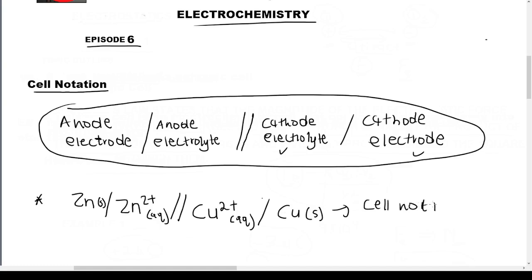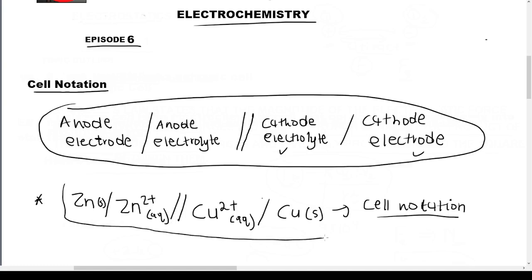Then zinc is a solid. So this is the cell notation — it's the general cell notation for a galvanic cell. Later on in the case of platinum and other electrodes we'll explain those things, but this is the general idea behind the cell notation for a galvanic cell.